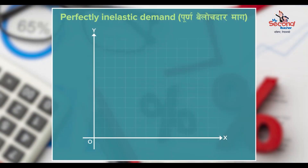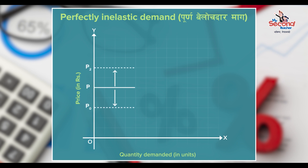To make a demand curve, the quantity demanded is placed on the x-axis and price is measured on the y-axis. For perfectly inelastic demand, when price increases or decreases, the quantity demanded does not change. So the demand curve is vertical and parallel to the y-axis.